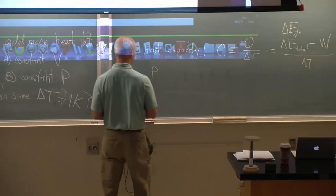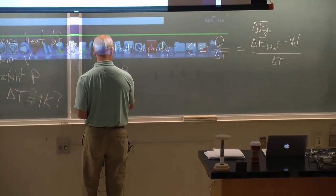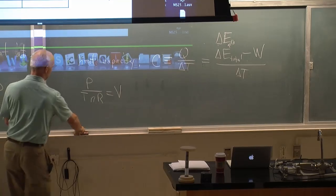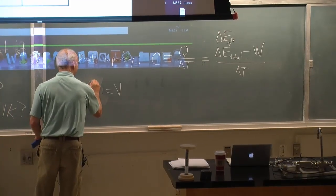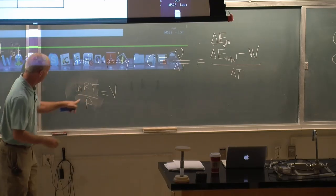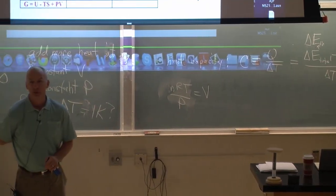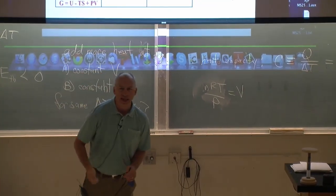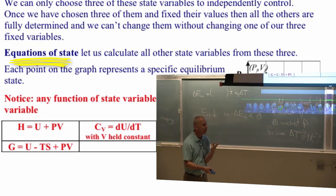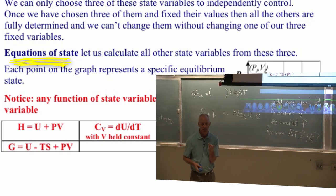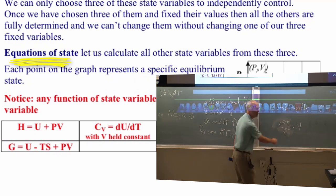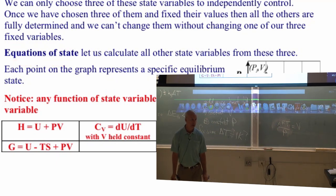If I know the pressure, the number of moles n, and the temperature, I can tell you the volume of the gas in this room. It's the ideal gas law — it's an equation of state. Every equation of state connects the three variables you know with any other variable you want to calculate. I know three variables — number of moles, temperature, and pressure — and with those I get another state variable: the volume.